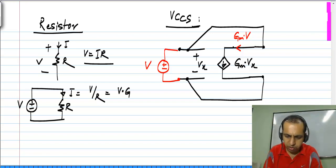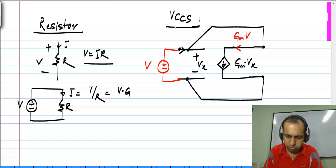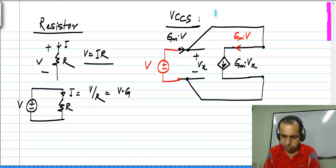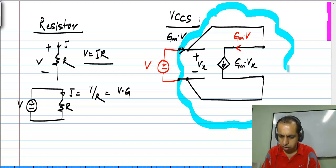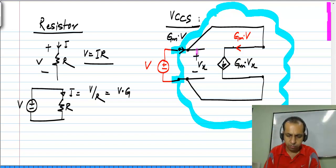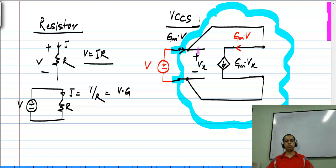This Gm times V will flow here and it will actually flow from this voltage source. So the current flowing out of the voltage source is Gm times V. If you consider the circuit within this boundary — that is, between these two terminals — as far as this voltage source is concerned, when it is connected to this particular circuit, it draws a current Gm times V, that is, it draws a current proportional to the voltage.